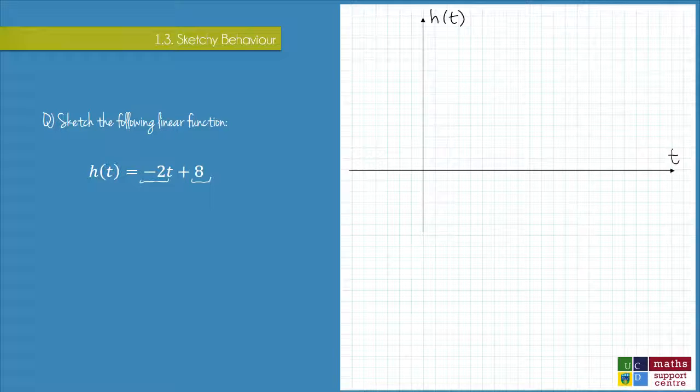Let me label these axes here quickly. 0, 1, so that would be 2, 4, 6, 8, 10. Do the same scale on the t-axis.